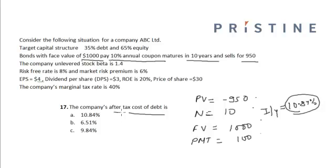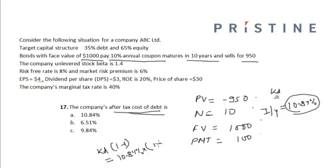Now we calculate the after-tax cost of debt, which is equal to KD times (1 minus T), which equals 10.84 percent times (1 minus 40 percent), which equals 6.51 percent. Hence the correct option is Option B.